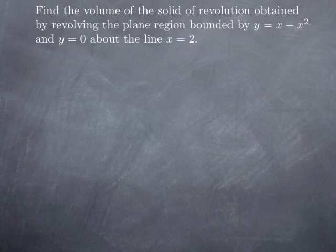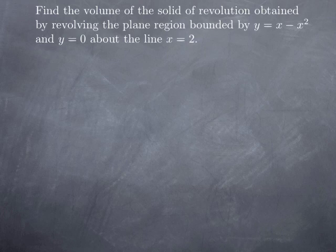Turning to the next example, we now want to find the volume of the solid of revolution obtained by revolving the plane region bounded by y equals x minus x squared and y equals 0 about the line x equals 2. This is a similar problem — we're looking at the area under the graph of a certain function and rotating it about a vertical line, but it's no longer the y-axis; it is the line x equals 2.